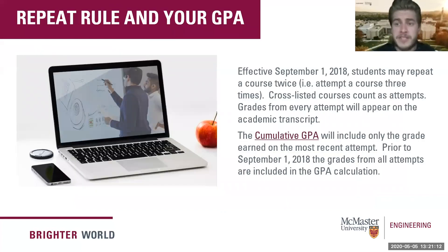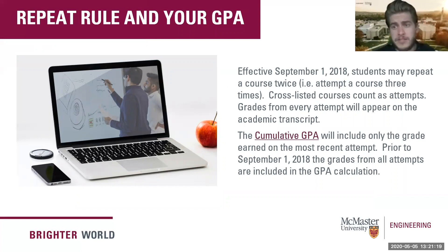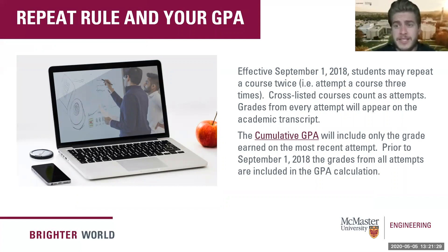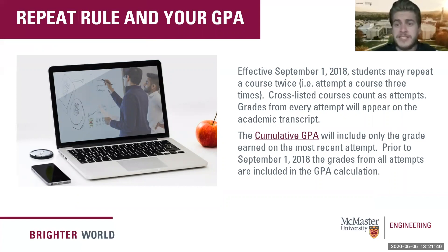Now let's go over some different scenarios to consider. McMaster has a repeat rule: if you repeat a course, the previous attempt is removed from your GPA calculation. This rule came into effect in fall 2018, so if your first attempt was taken before fall 2018, unfortunately it does not fall under this policy. However, if you took a course from fall 2018 onward and have since repeated it, that earlier attempt is removed and only the new attempt counts.